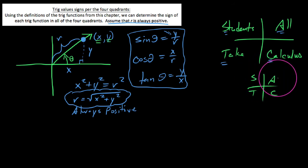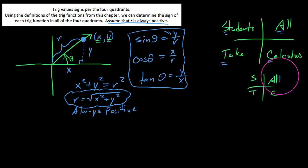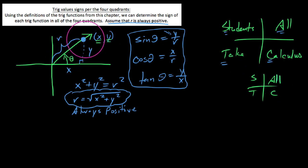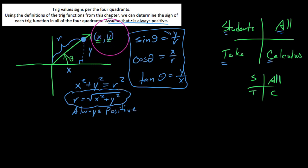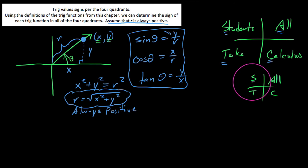'A' means all trig functions are positive in the first quadrant. The reason is that if an angle terminates in quadrant I and we pick a point on the terminal side, both x and y are positive. So y over r, x over r, and y over x all give positive values since x, y, and r are all positive.